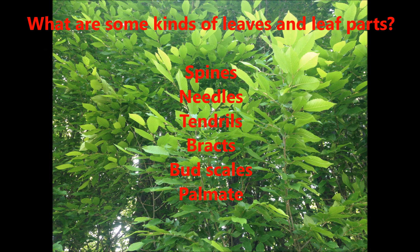What are some kinds of leaves and leaf parts? Spines, needles, tendrils, bracts, buds, scales.